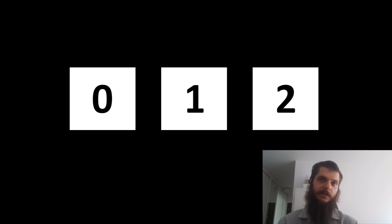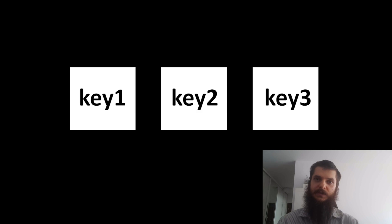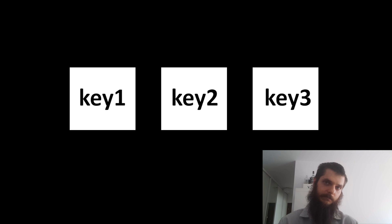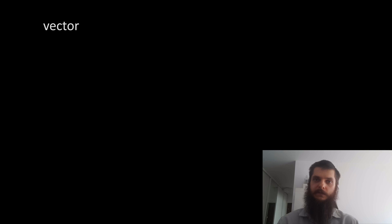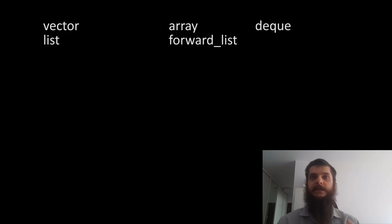On the other hand, associative containers are based on the key concept. Each element gets assigned a key — you don't have your first, second, third element, you've got your element with key value 1, key value 2, key value 3, etc. Within sequence containers, you've got containers like a vector, array, a list, a forward list, and a deque.